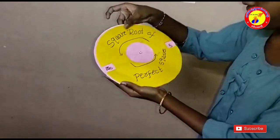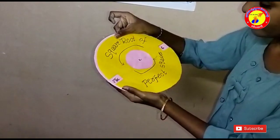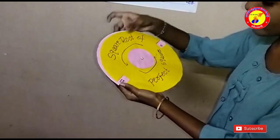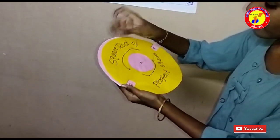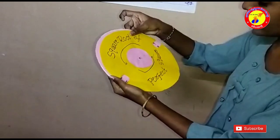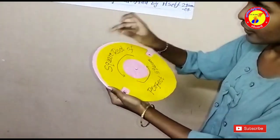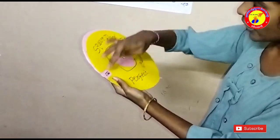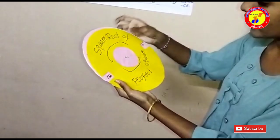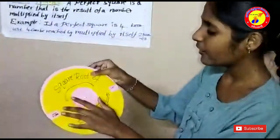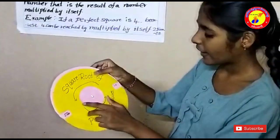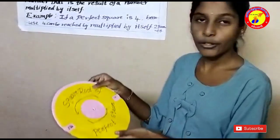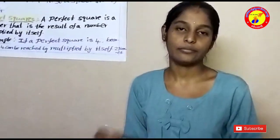Root 25 is equals to 5, root 36 is equals to 6, root 49 is equals to 7, root 64 is equals to 8, root 81 is equals to 9, root 100 is equals to 10. So these are the square roots and these are the perfect squares. I hope you like this video. Thank you.